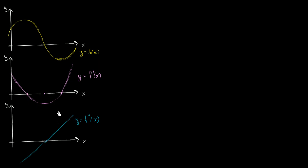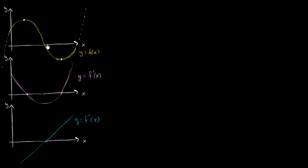We've already seen examples of how we can identify minimum and maximum points. Obviously, if we have the graph in front of us, it's not hard for a human brain to identify a local maximum point or a local minimum point. But even if we don't have the graph in front of us, or even if we're not able to take the derivative of the function, we might be able to identify these points as minimum or maximum.